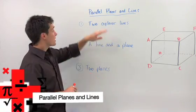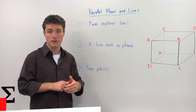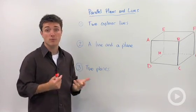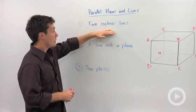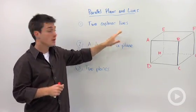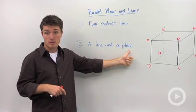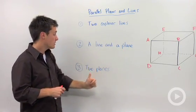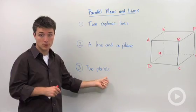In geometry, when we talk about this concept of two things being parallel, we aren't just talking about two parallel lines. We could be talking about the two coplanar lines, but a line and a plane can be parallel to each other, and two planes can be parallel to each other.